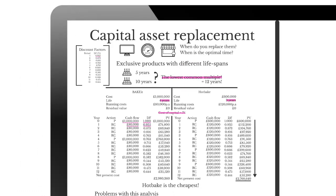Despite those issues, it is a very good way of assessing which particular asset is the best one to use within your organization — which one is going to cost the least over a period of time. If we had just looked at initial costs and running costs in isolation, we may not have foreseen which would be cheapest. Someone might choose the Hot-Bake because it's cheaper to buy, or the Bake-It because it costs less per year and lasts longer. But only by comparing each oven over a common 12-year period using the lowest common multiple can we definitively identify the Hot-Bake as the cheapest option.